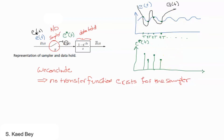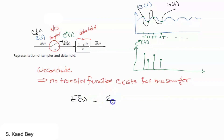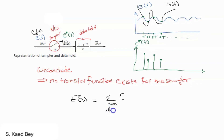E-star of s can be found using the residue method. That is the summation of the residues when substituted at the poles of E of lambda.